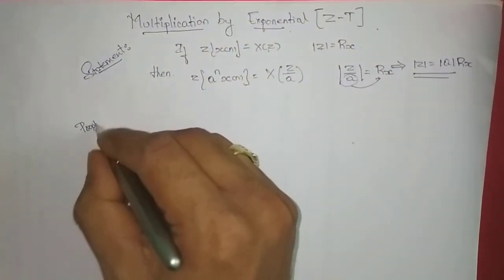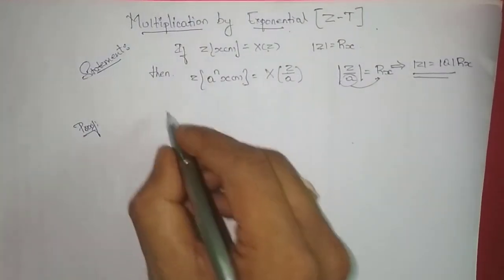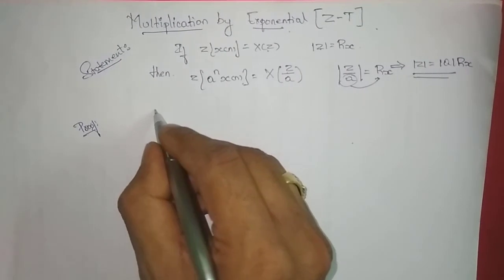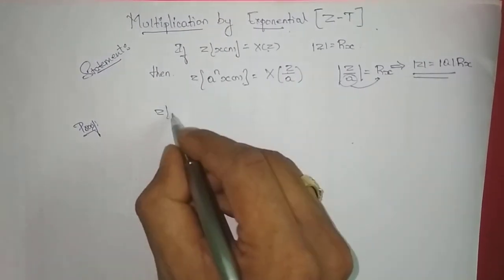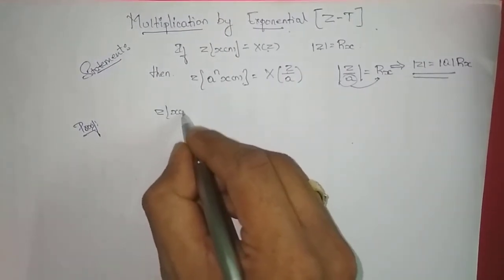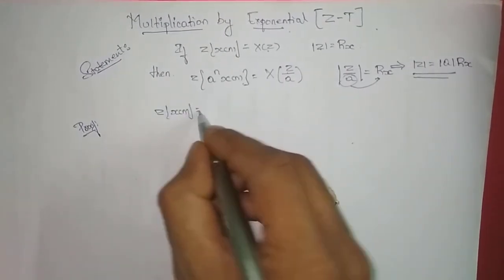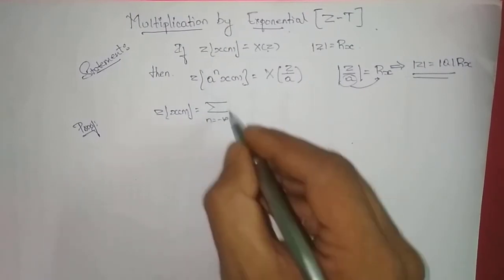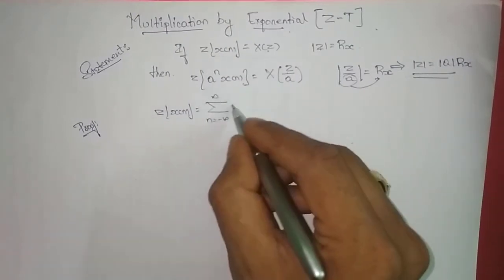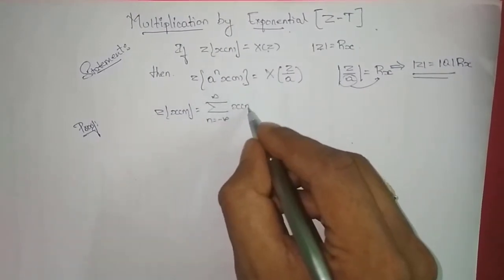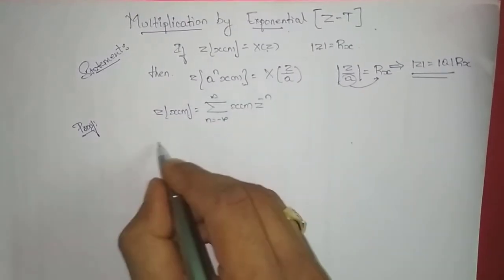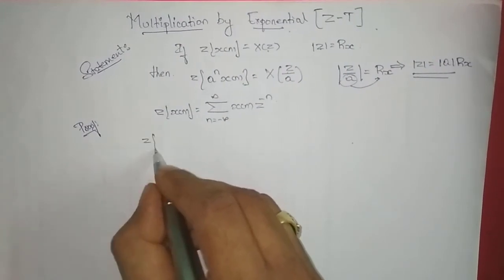Proof: From the definition of the Z-transform, we have Z-transform of x[n] equal to the summation, n varying from minus infinity to infinity, of x[n] · Z^(−n).